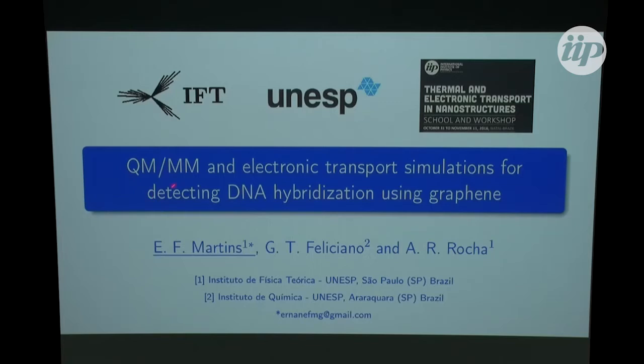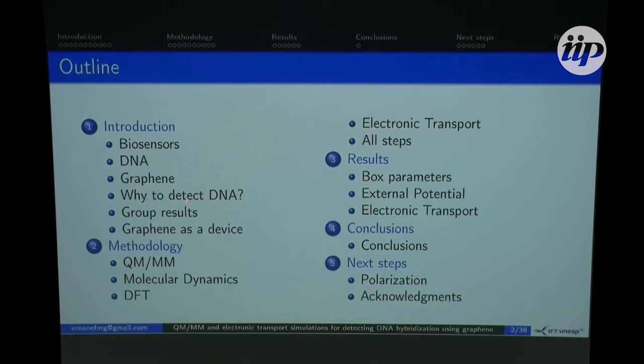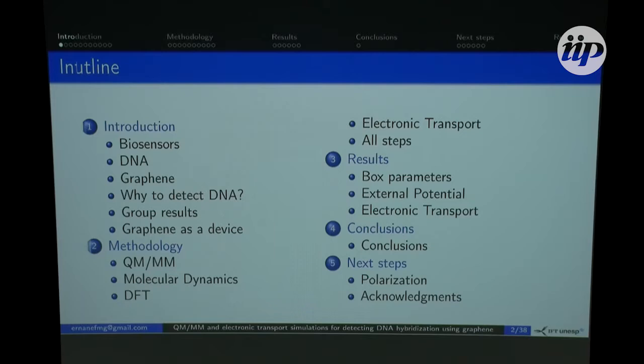Here we talk about QM/MM and electronic transport simulations for detecting DNA hybridization using graphene. The outline of the presentation is the following: I will introduce biosensors, DNA, and graphene, and explain why we want to detect DNA. I will show some results of our group, explain the idea of using graphene as a device, and describe the methodology: QM/MM calculations, molecular dynamics, DFT, and electronic transport calculations. Then I will show my results and conclude with next steps.